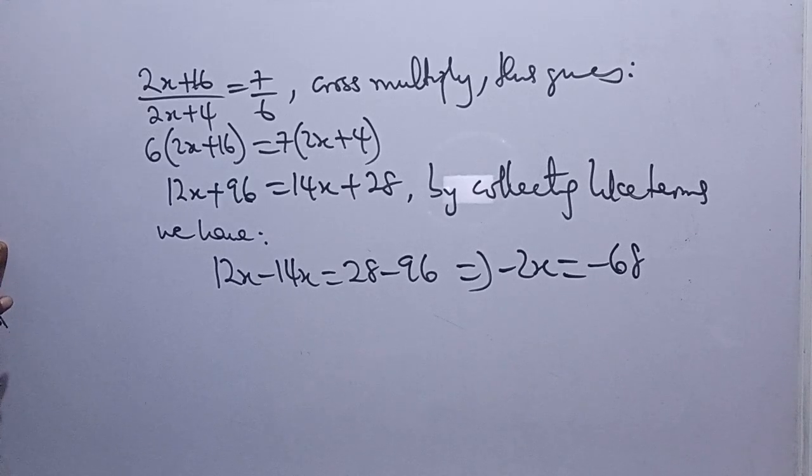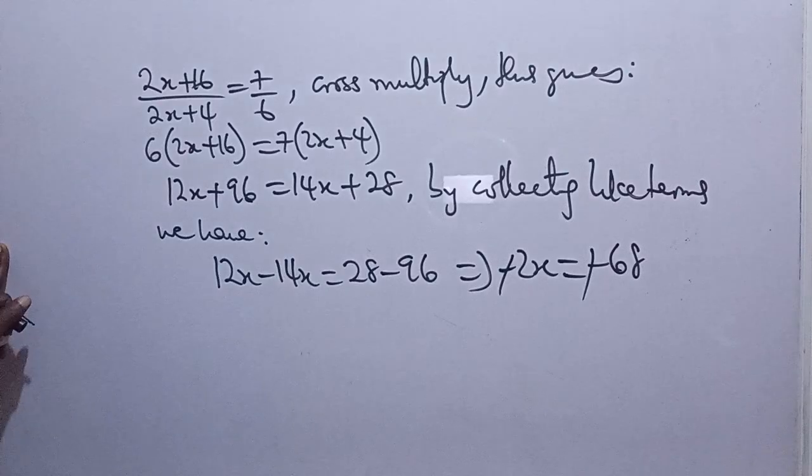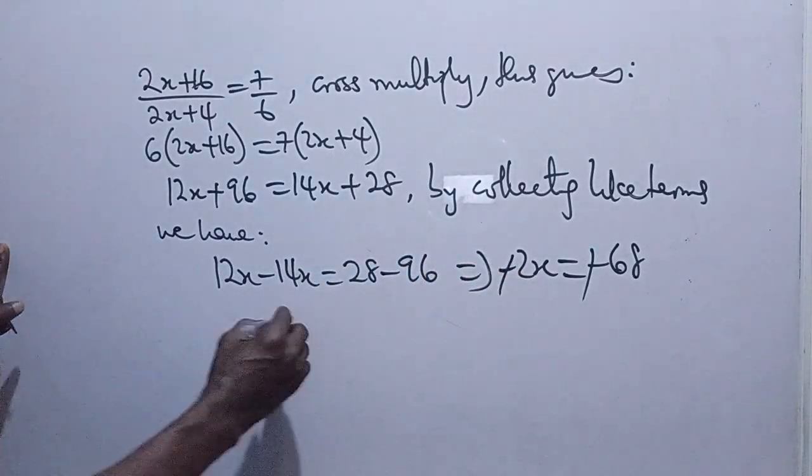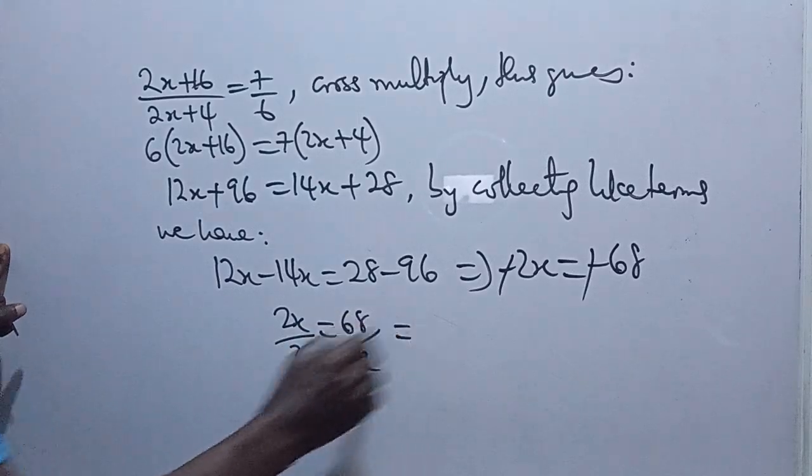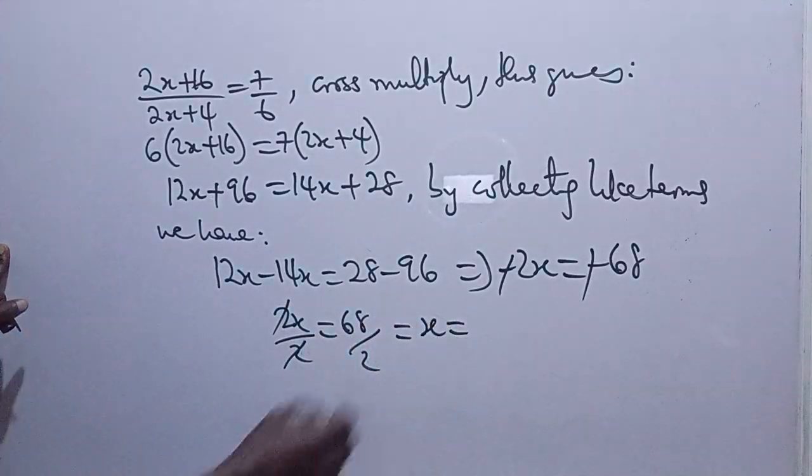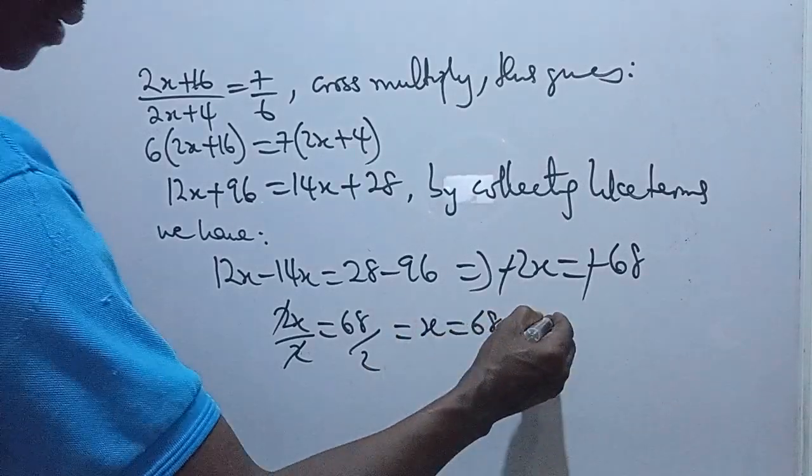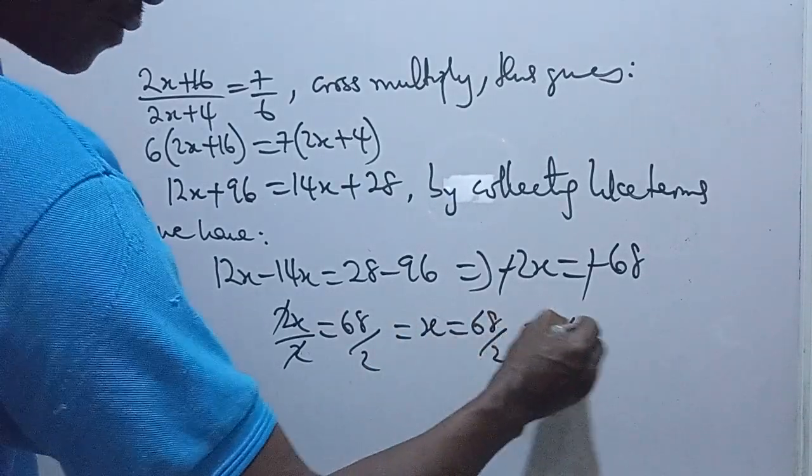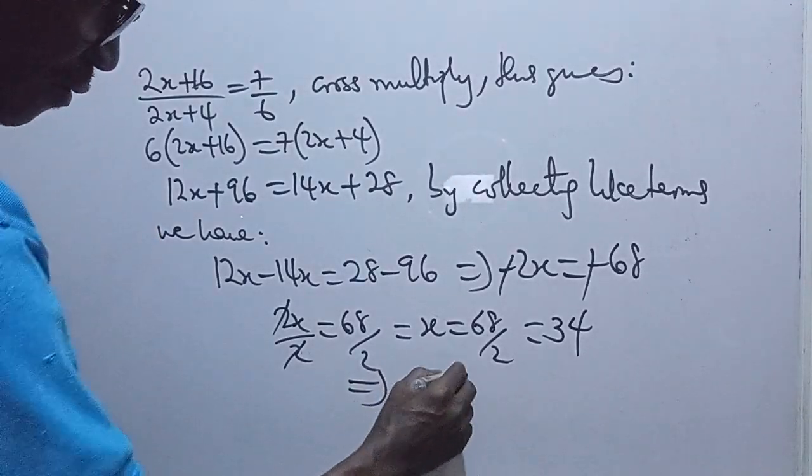That's correct. Minus here, we cancel minus here. So you have 2x equals 68. Now dividing both sides by 2, you have 2x over 2 is equal to 68 over 2. So 2 will cancel 2 out here. You have x is equal to 68 over 2, which is what? 2 in 6 is 3, 2 in 8 is 4. So the answer now is x is equal to 34.